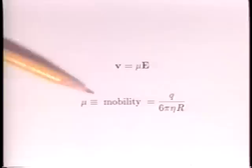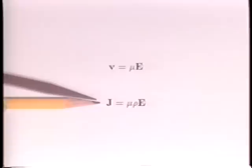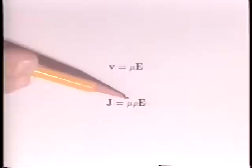If these particles are the only ones that are charged and moving, the current density is the product of their velocity and the charge density rho. The product of mu and rho is an effective conductivity.